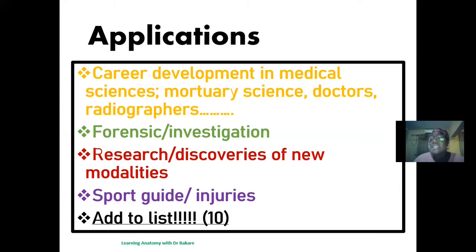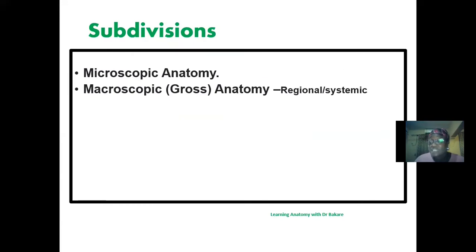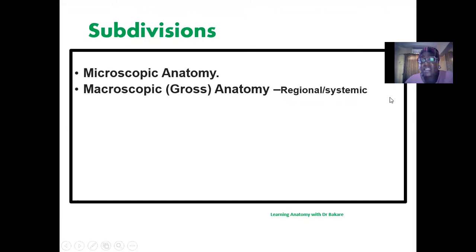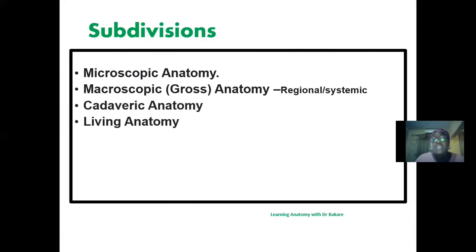There are different subdivisions in anatomy. We have microscopic anatomy, which involves histological evaluation of different organs in the body studied with the aid of a microscope. We also have macroscopic anatomy, which is gross anatomy — either region-based or systemic — representing the gross presentation of organs visible with the naked eye. Then we have cadaveric anatomy, which involves the use of a cadaver to study anatomy, and living anatomy, where living subjects are used.